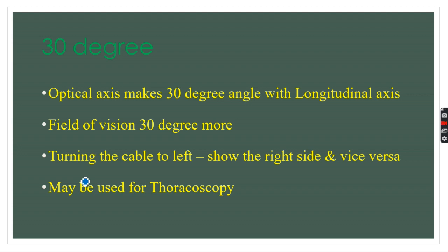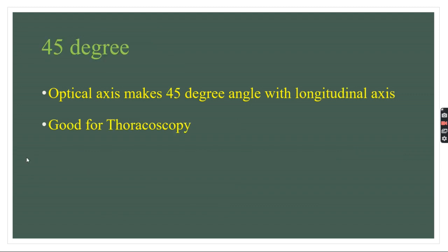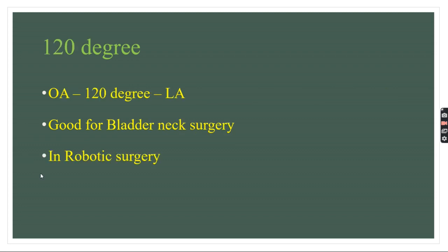The 30-degree telescope can be used for thoracoscopy and is routinely used for almost all surgeries including laparoscopy and cardiac surgeries. Its optical axis makes a 30-degree angle with the longitudinal axis, giving more left and right field of vision — by turning the cable to the left we can see the right side and vice versa. The 45-degree is preferred for thoracoscopy as its optical axis makes a 45-degree angle with the longitudinal axis, giving more range of vision. The 70-degree is used for ENT and laryngeal visualization. The 120-degree telescope, whose optical axis forms a 120-degree angle with the longitudinal axis, is good for bladder neck surgery and is usually used in robotic surgery for specialized purposes.